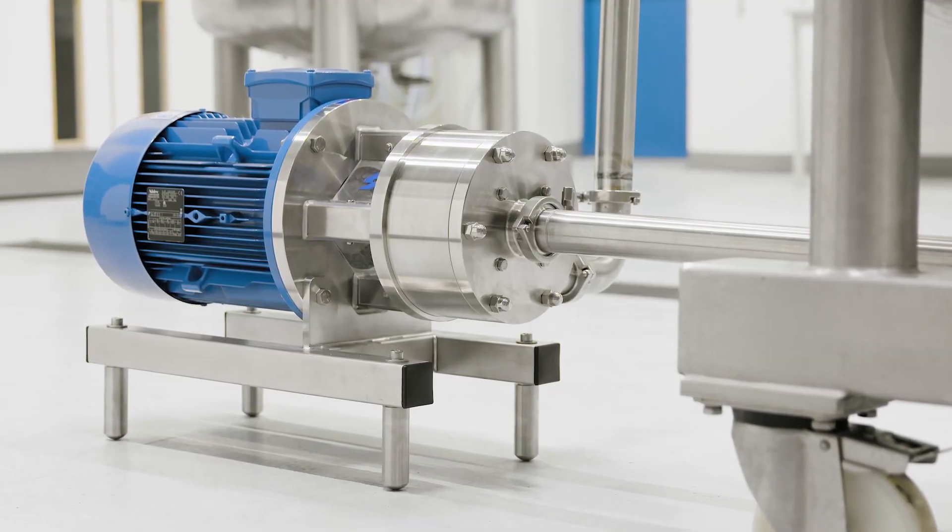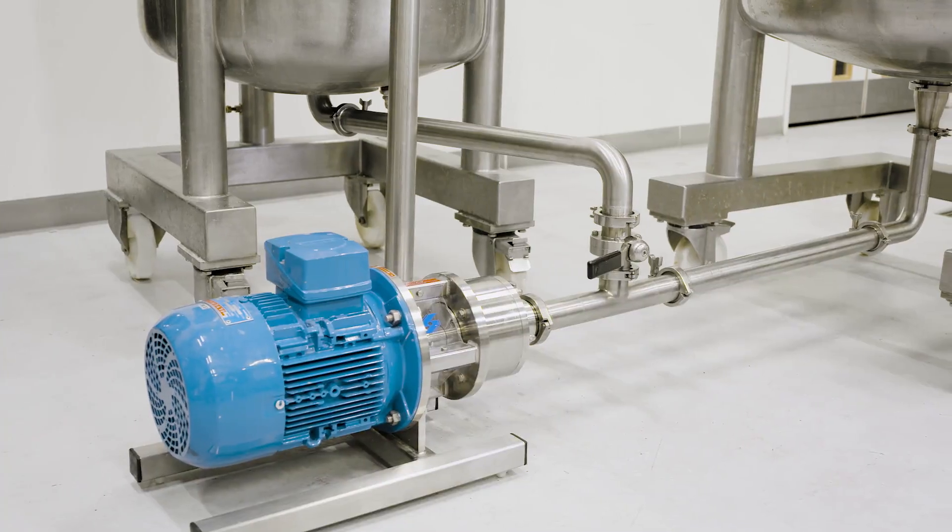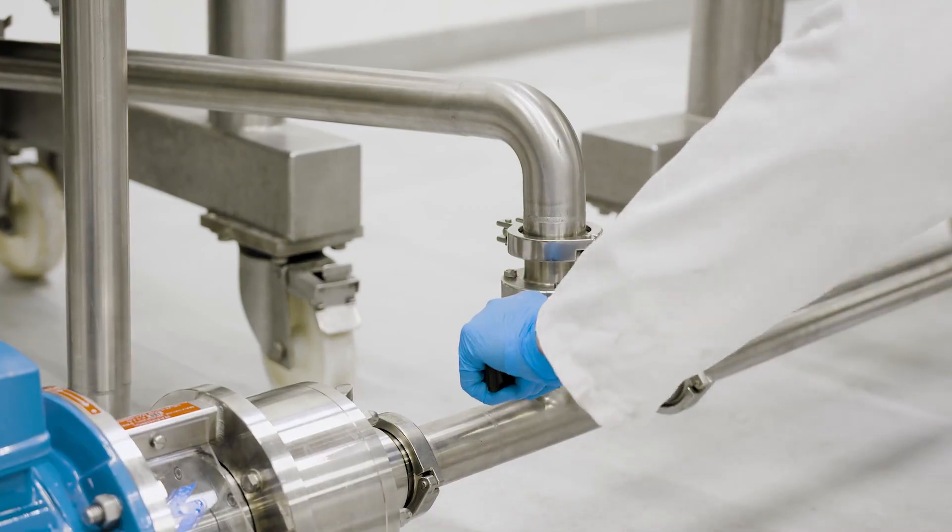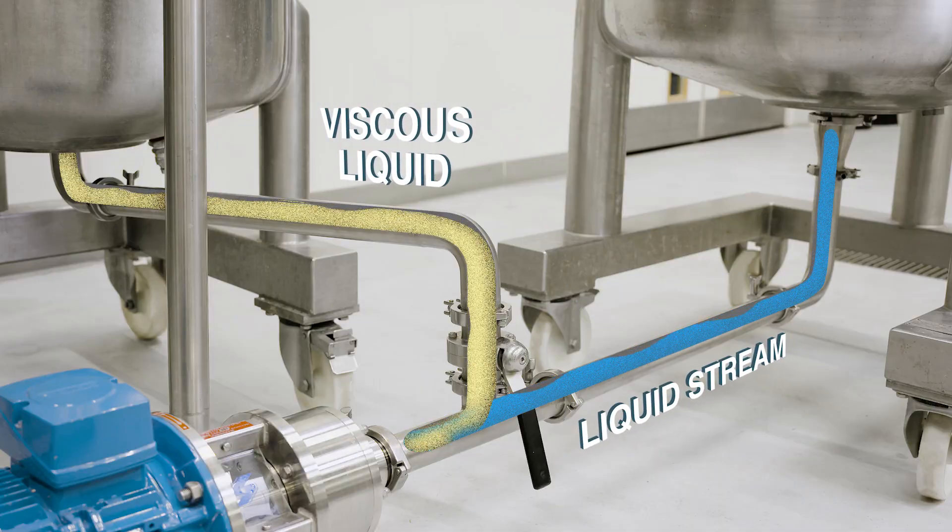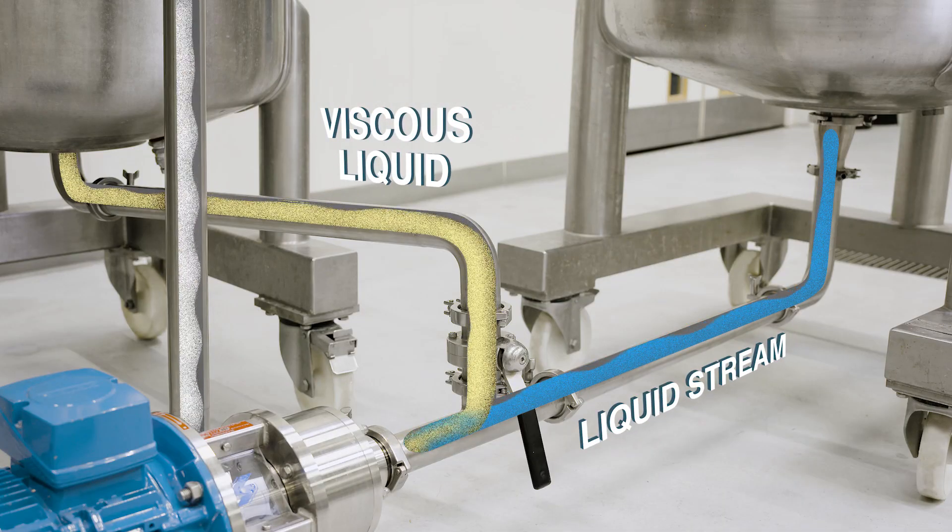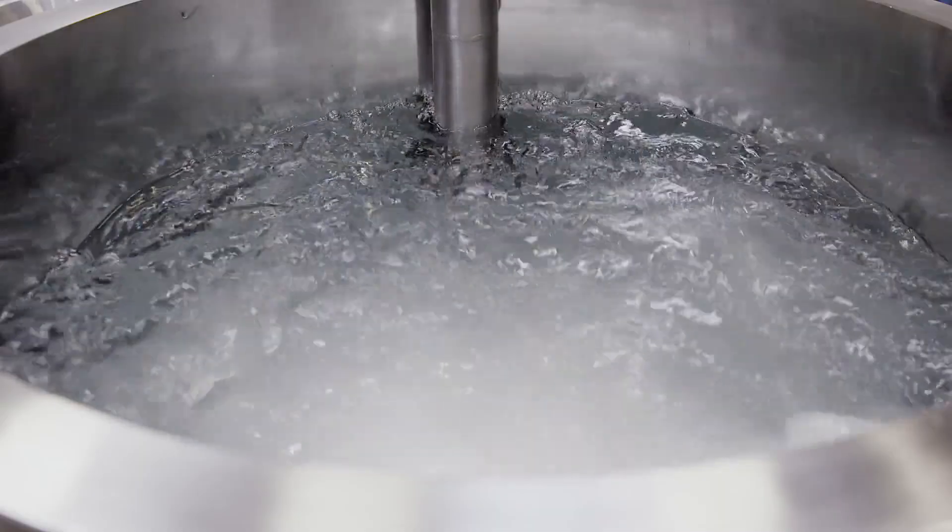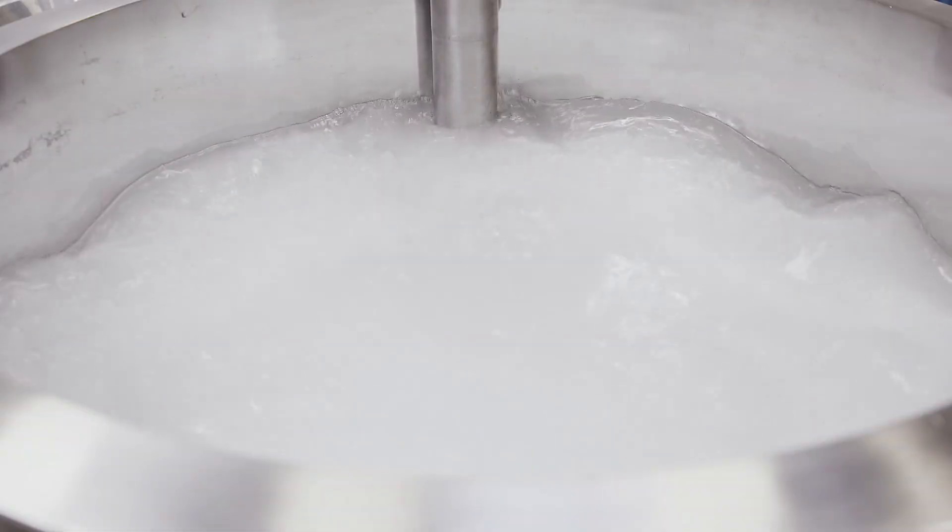For larger batches and continuous processes, a Silverson inline mixer is the simplest option, with the more viscous liquid being introduced into the pipeline prior to the inlet of the inline mixer, so that the liquid streams are immediately subjected to intense high shear on contact, resulting in a homogenous blend in a single pass.